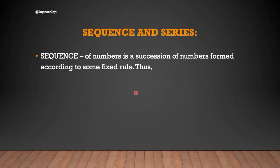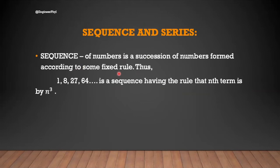Sequence. A sequence of numbers is a succession of numbers formed according to some fixed rule. Thus, 1, 8, 27, 64, and so on, is a sequence having the rule that the nth term is n raised to 3.